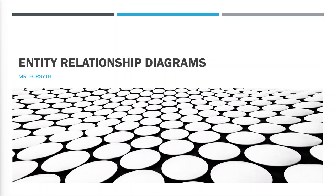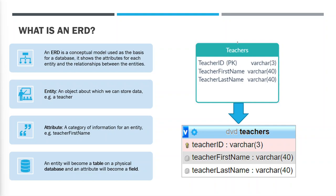As a computer scientist, creating entity relationship diagrams is a vital skill if you're going to be working with databases. An entity is an object about which we can store data, and those will normally end up on our system as tables in a database. An entity relationship diagram shows what the entities are and the relationships between those.